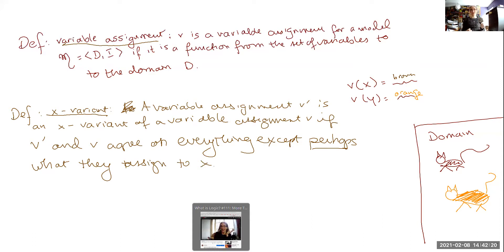So they don't have to differ on x. So every variable assignment is an x variant of itself. Every variable assignment is also a y variant itself. So a y variant is just an assignment that assigns everything the same, except potentially what it assigns to y.